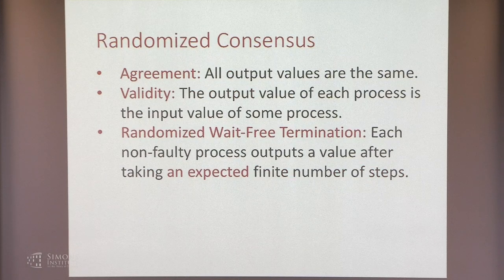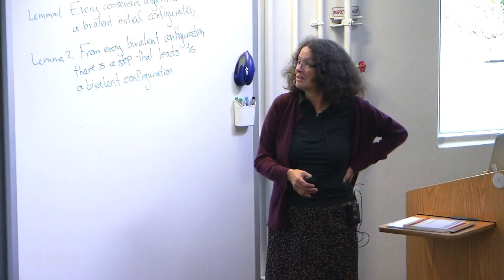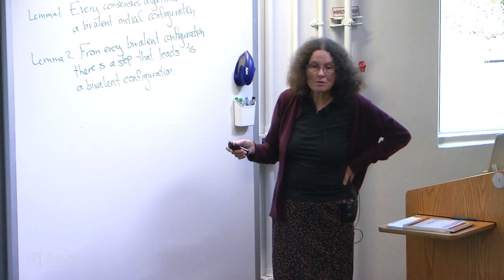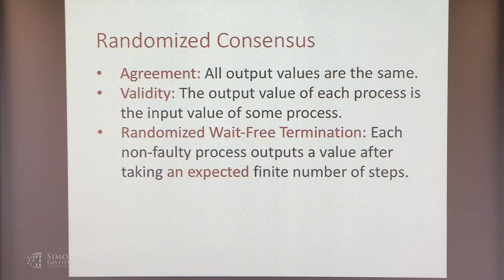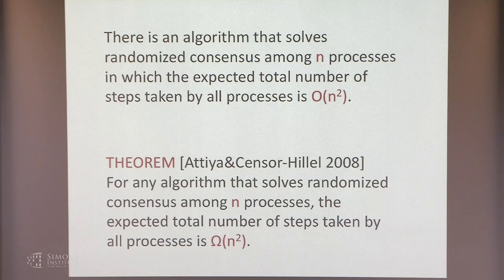Consensus can also be solved using randomization — it's really important for distributed computing, so there are many ways around the impossibility. Using stronger shared memory primitives or randomization are good approaches. The problem statement changes: instead of wait-free termination, we have randomized wait-free termination — each non-faulty process outputs a value after taking an expected finite number of steps, with infinite executions possible but happening with zero probability.